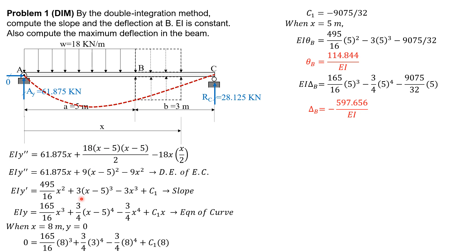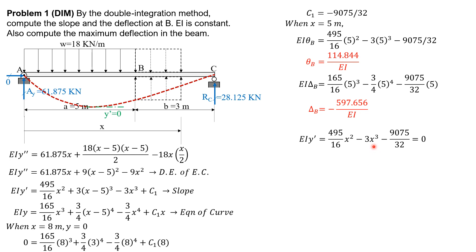Setting EI y prime to zero: 495/16 x squared minus 3x cubed plus C sub 1 (which is negative 9075/32) equals zero. Solving for x by trial and error or using a calculator capable of finding roots of a cubic function, the only acceptable value of x less than 5 is 3.824 meters.